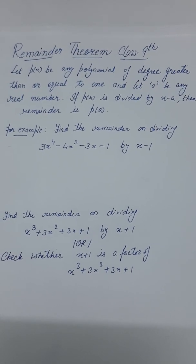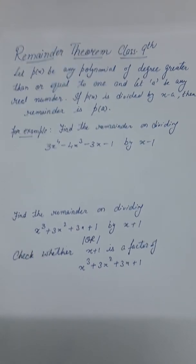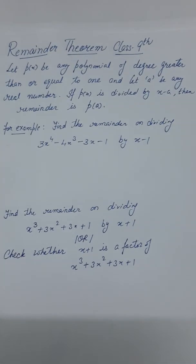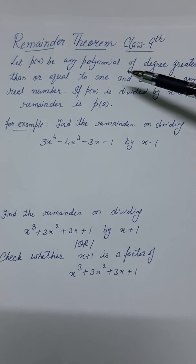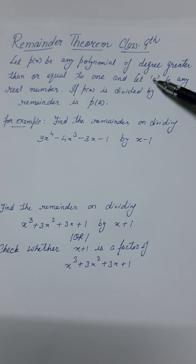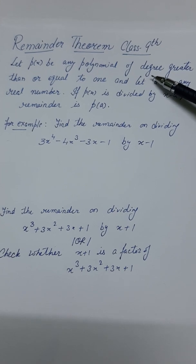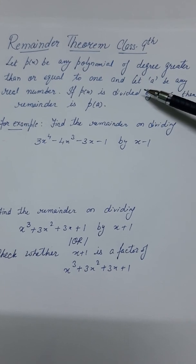So let us start. Remainder Theorem class 9th. Let p(x) be any polynomial of degree greater than or equal to 1. We are having any polynomial of degree greater than or equal to 1. The degree should be 1 or greater than 1.